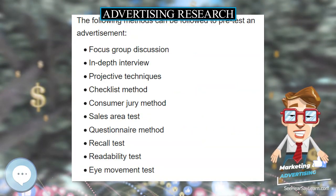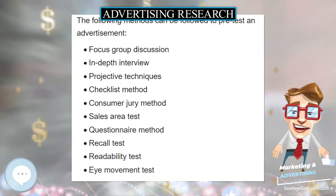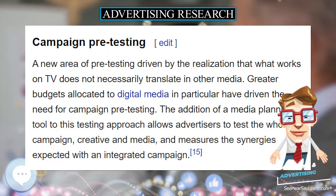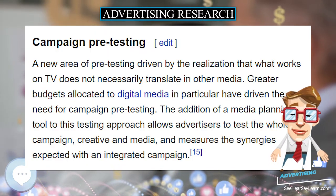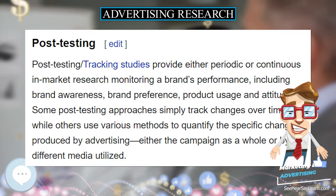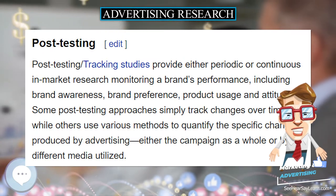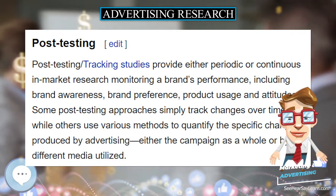In 1916, R.O. Eastman starts his own company, the Eastman Research Bureau, which boasts clients such as Cosmopolitan, Christian Herald, and General Electric.